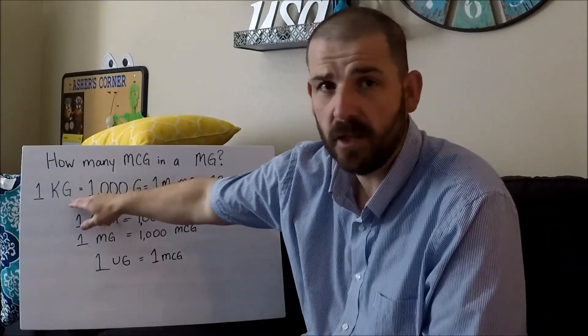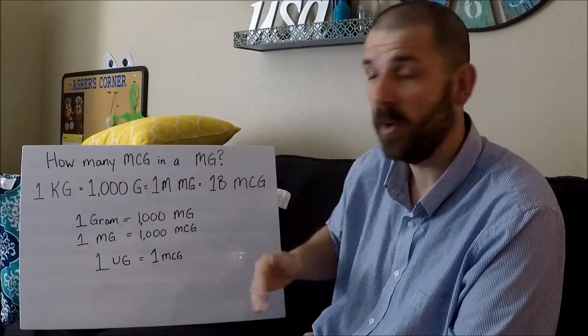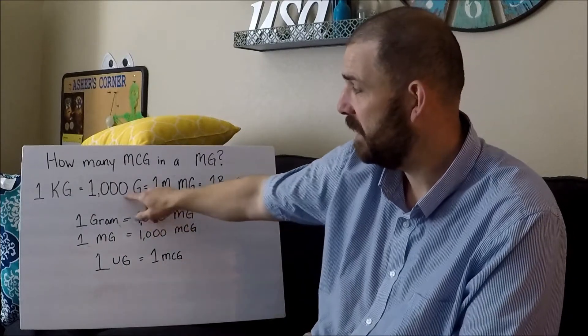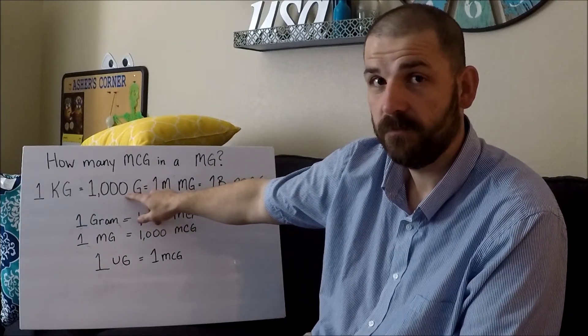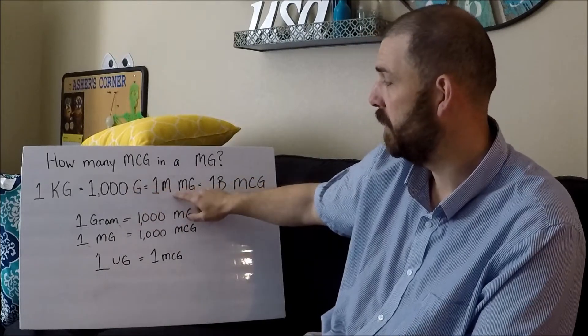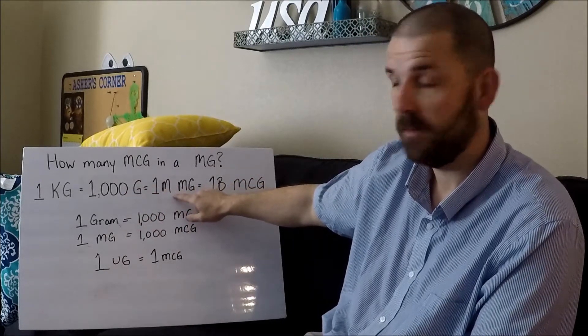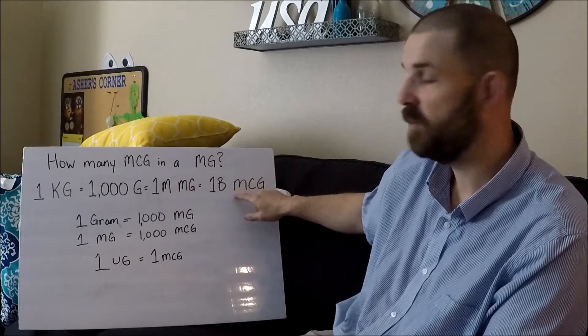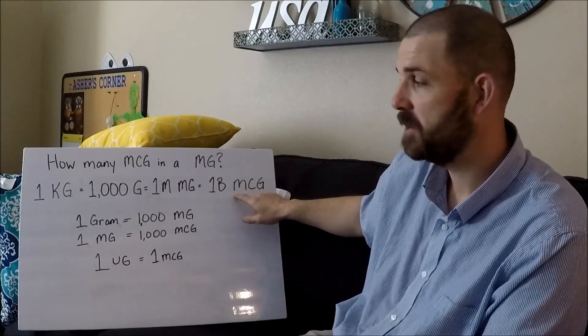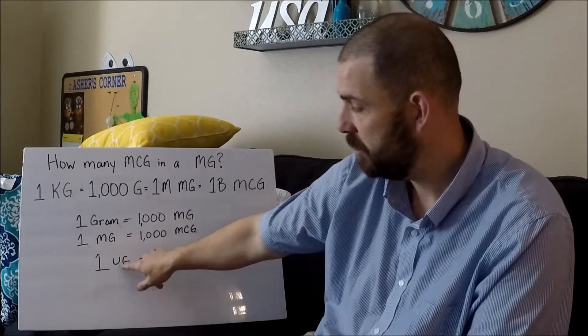So anyway, we start out with one kilogram, which is roughly 2.2 pounds. That equates to 1000 grams, which equates to 1 million milligrams, which equates to 1 billion micrograms or 1 billion UG.